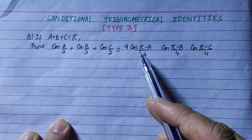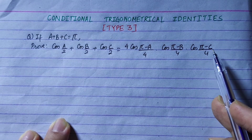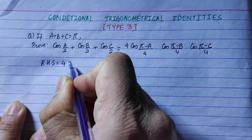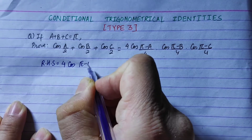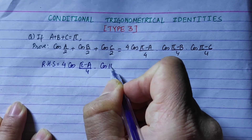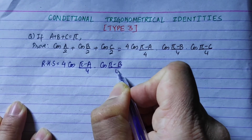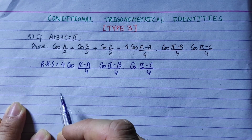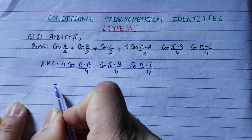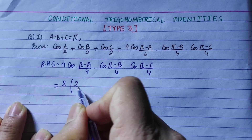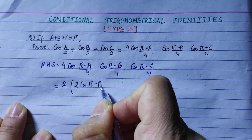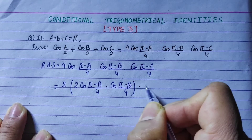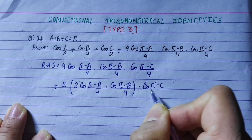We will start with RHS: 4·cos((π-a)/4)·cos((π-b)/4)·cos((π-c)/4). We will group this as 2·cos((π-a)/4)·cos((π-b)/4), multiplied by 2·cos((π-c)/4).